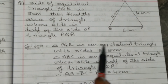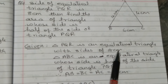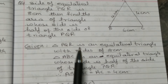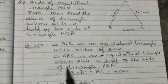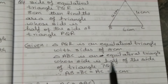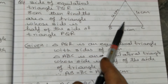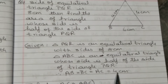Given: triangle PQR is an equilateral triangle with sides of 8 cm. Triangle ABC is an equilateral triangle whose side is half, that is 4 cm. Therefore AB = BC = AC = 4 cm.